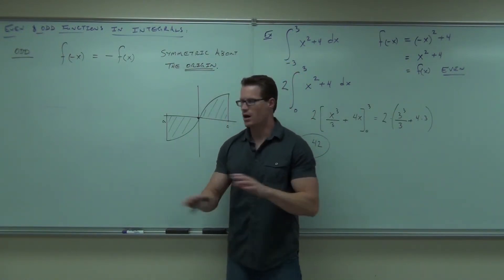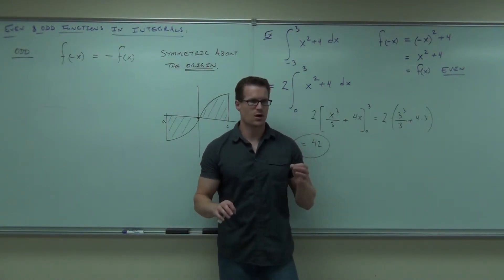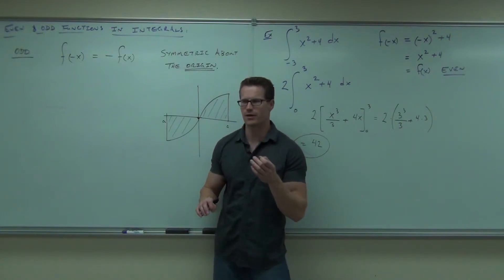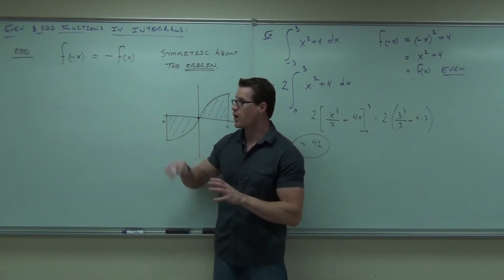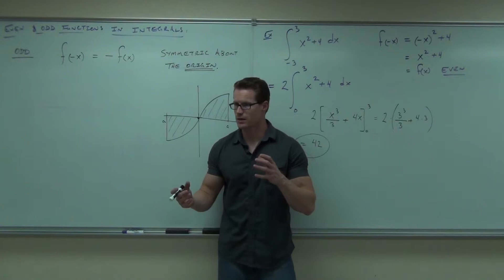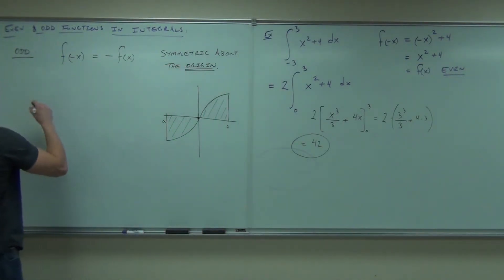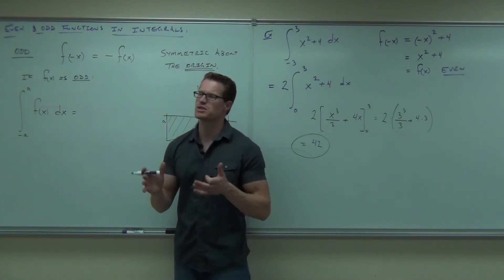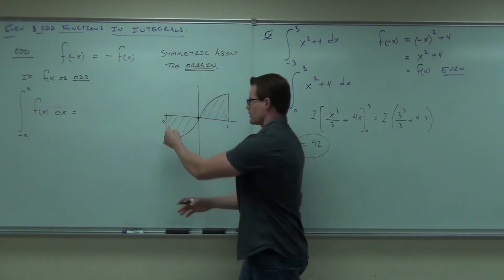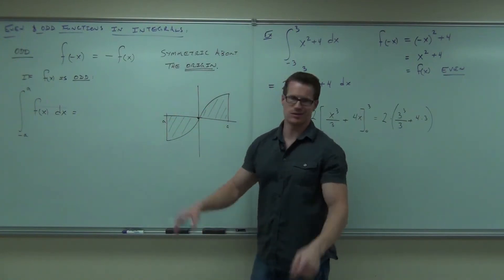That would be for net area. If it asks for total area, it would be exactly the same as an even function. It would be this times two, just like an even function was for total area. Now, a definite integral does not automatically calculate total area. A definite integral automatically calculates net signed area unless you have what in there? That's exactly right.